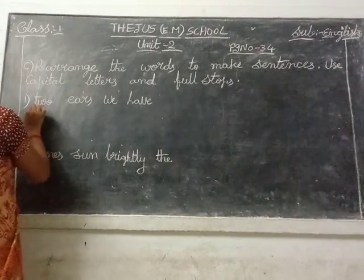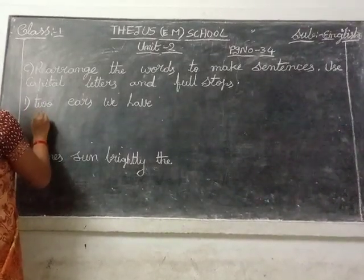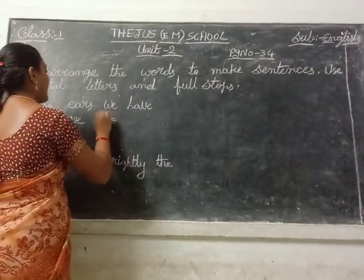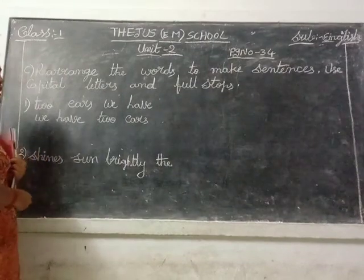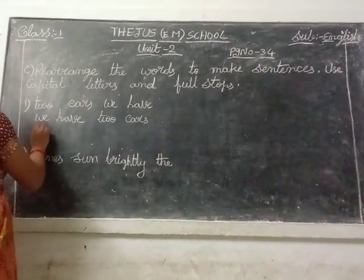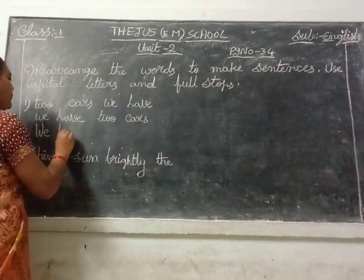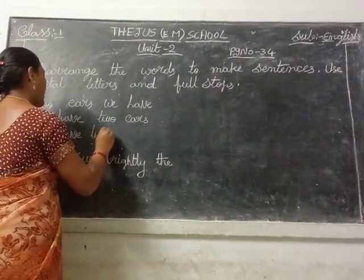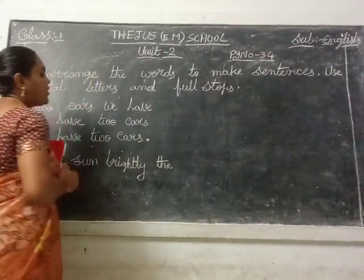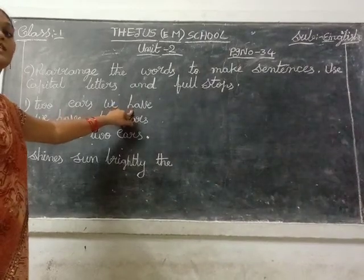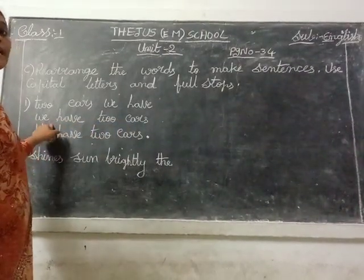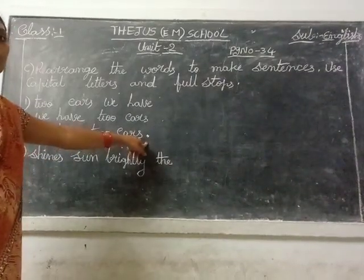So we have 2 years. First arrange these words correctly: we have 2 years. This is the correct sentence and you write this sentence starting with capital letter. Capital W — we have 2 years. The sentence is completed, so now put the full stop. The first given sentence was wrong, meaningless. So we write that sentence the correct way: we have 2 years. That is the meaningful sentence. The sentence starts with a capital letter and ends with a full stop.